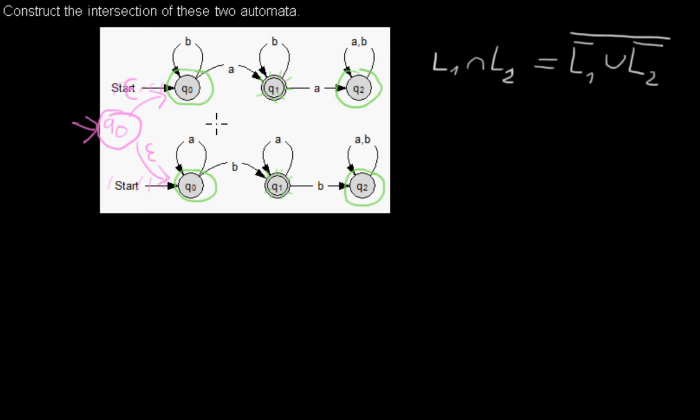Now we don't have a deterministic automaton anymore. So to take the complement of the new automaton, I have to determine and minimize it again—I have to get rid of the epsilon transitions and so on.